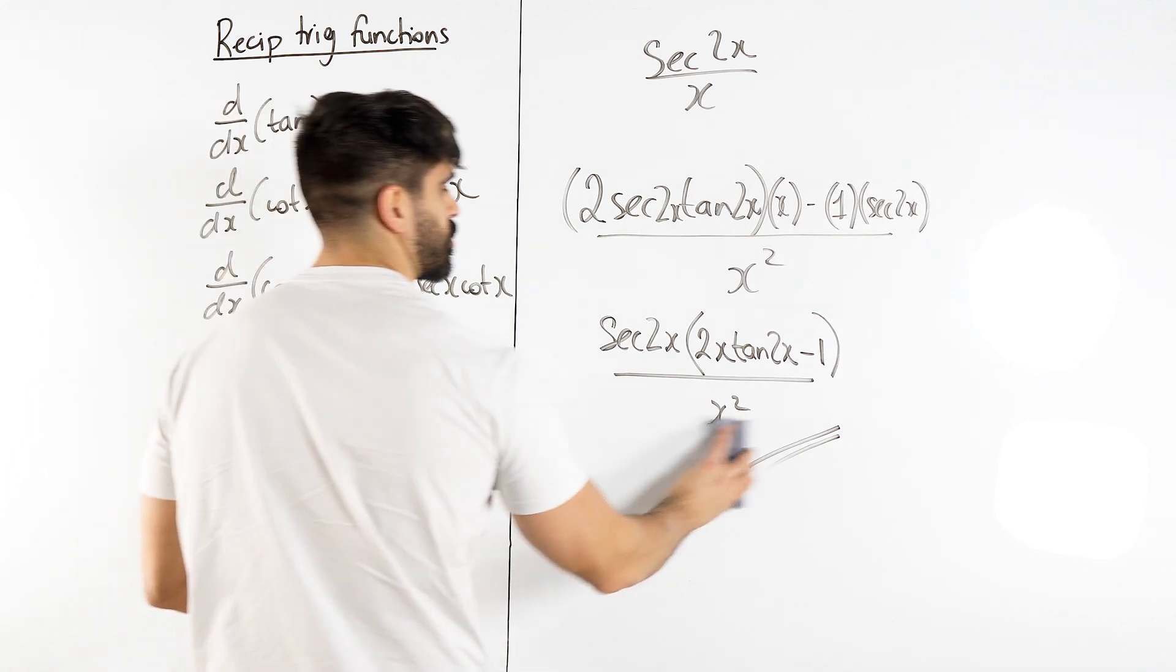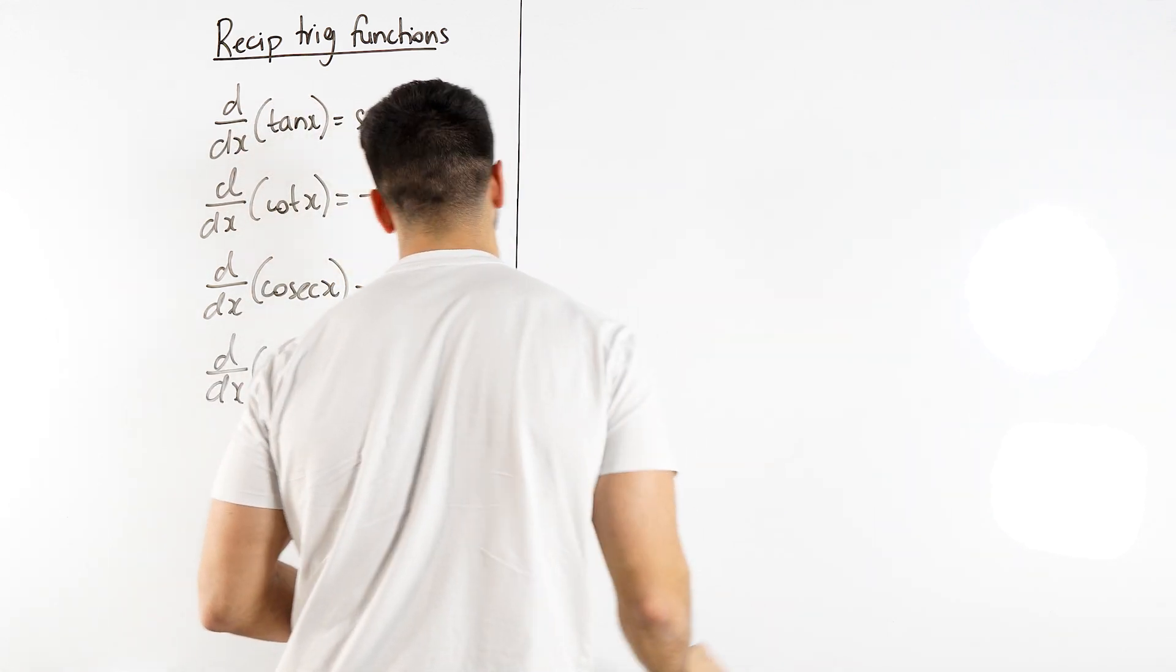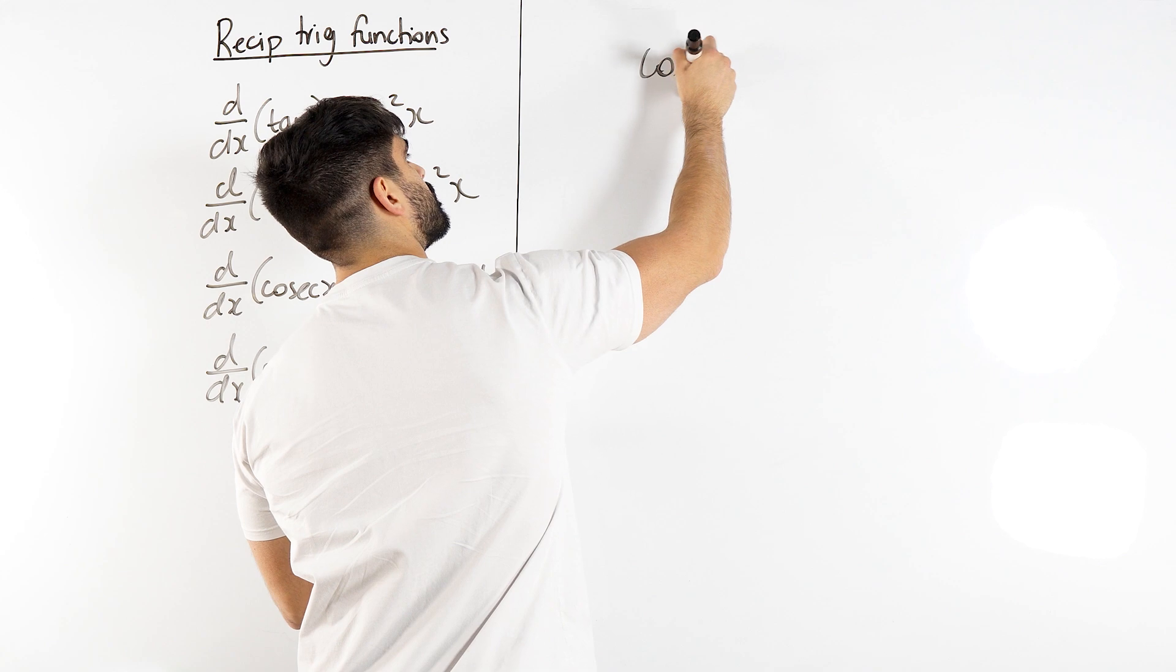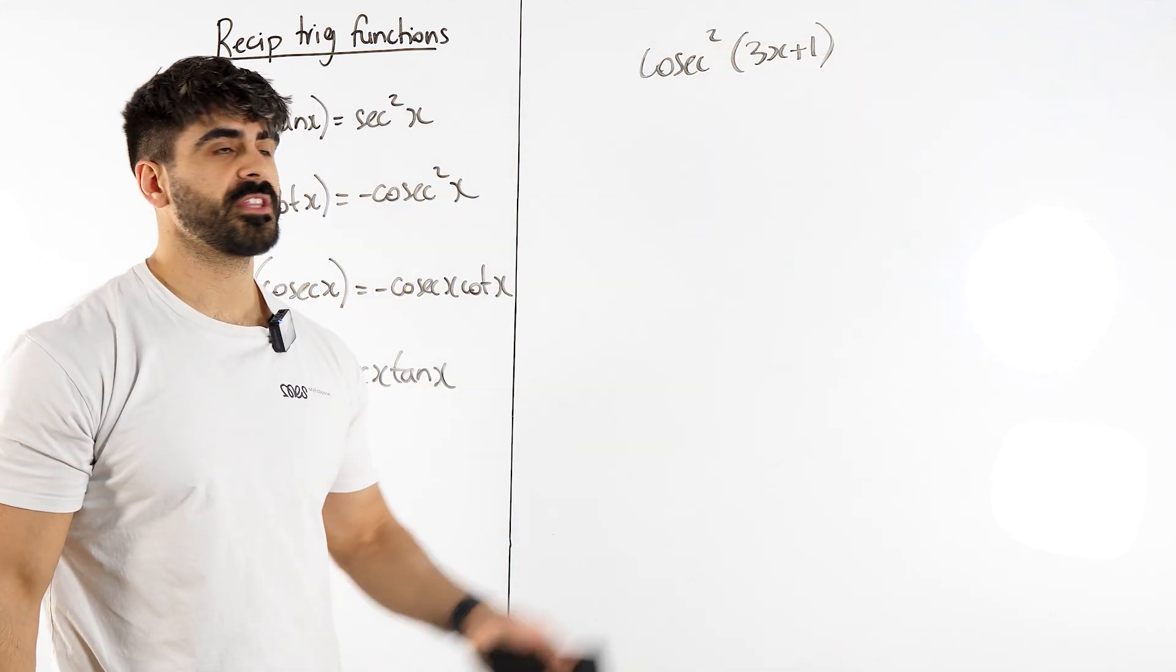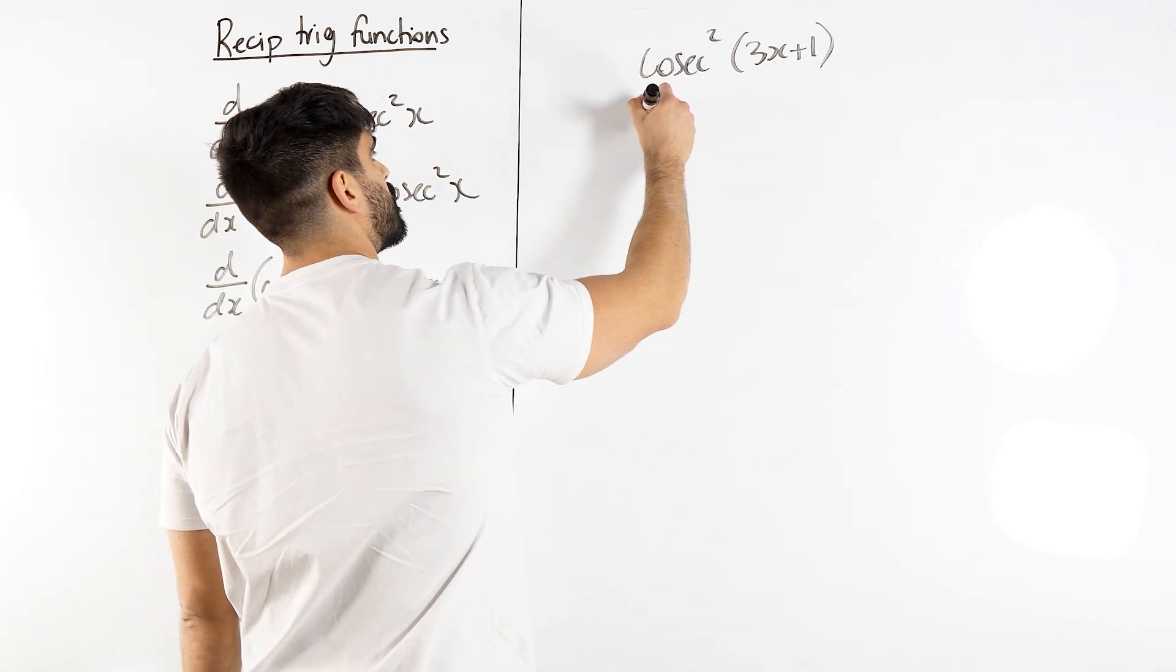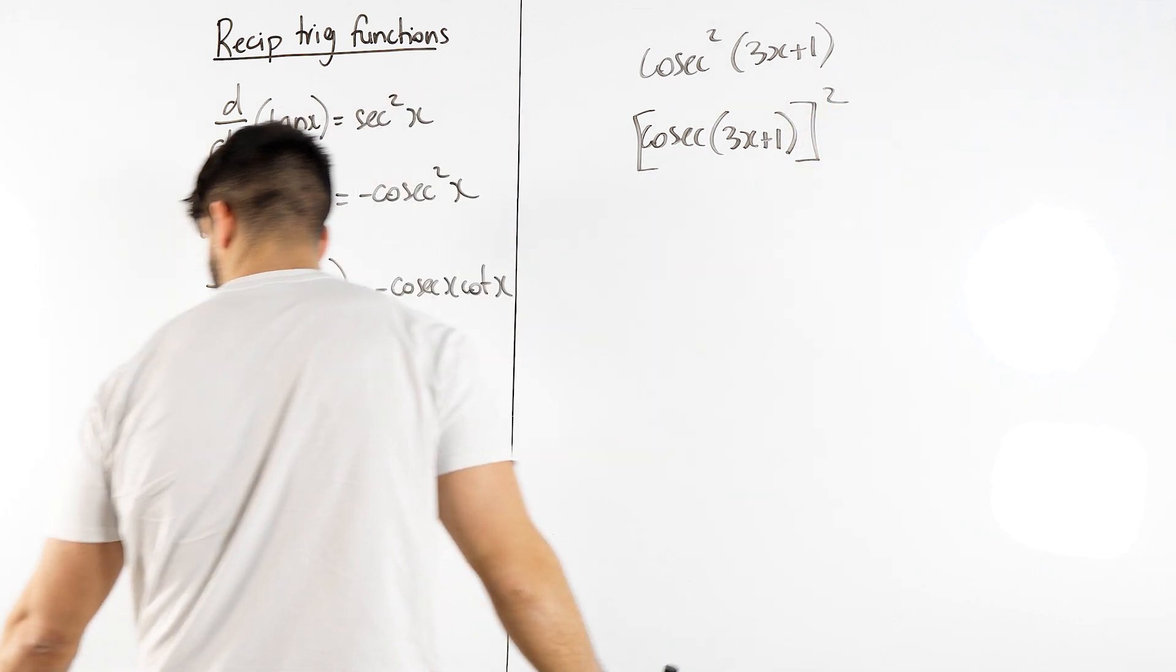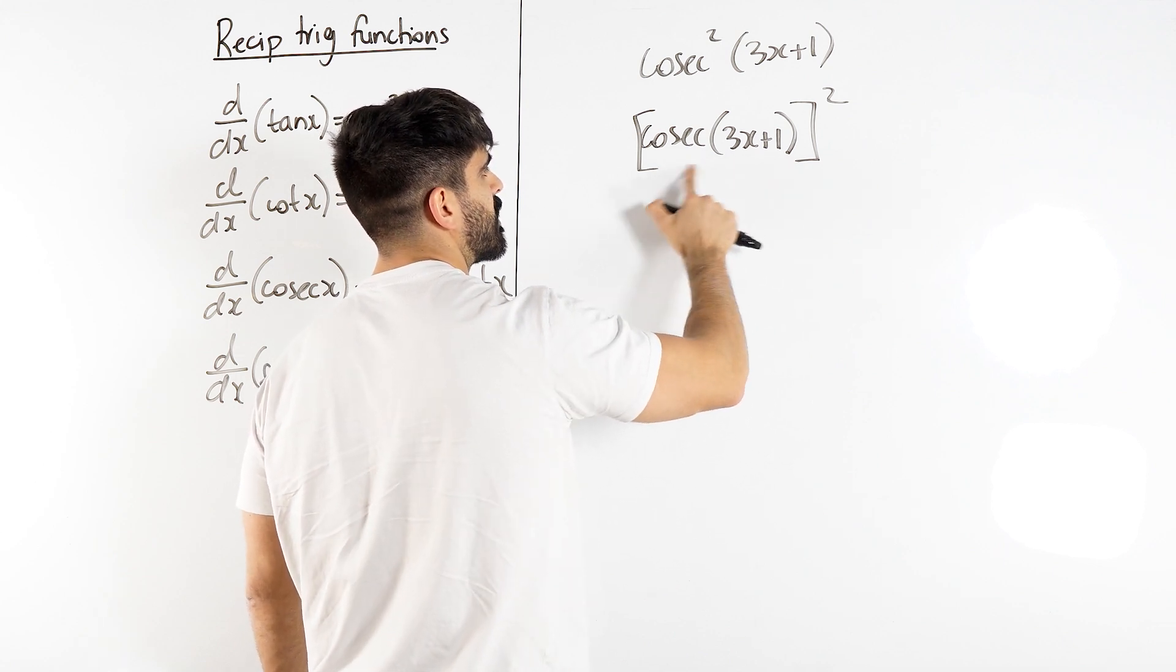Finally I have one more question. We have cosec squared 3x plus 1. How do we differentiate this? It says squared. The squared takes priority. This is a power function. So I'm going to rewrite it as cosec of 3x plus 1 all squared. To differentiate this, we differentiate what we would have let equal u first. So we differentiate cosec 3x plus 1. Forget about anything else.